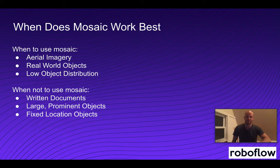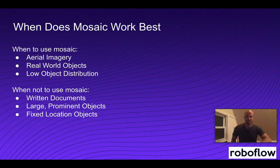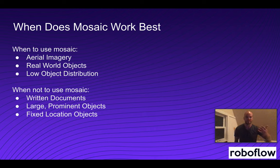Let's talk about scenarios where mosaic works best and where it might not work well. This is a heavy-hitting augmentation so you need to be careful when you use it. Great examples include aerial imagery, where objects can appear anywhere on the ground — moving them around in different contexts teaches the model more robustness. It's also good for real-world objects like fish or animals in scenes, since these can generally be moved around. These are good examples where mosaic will really improve model performance.